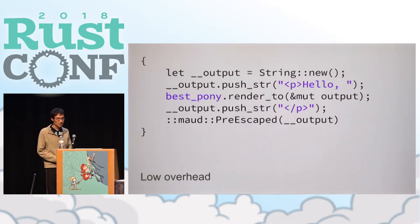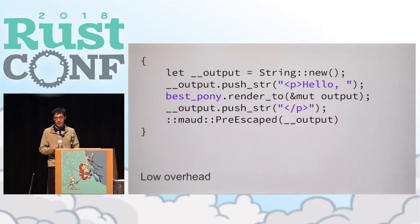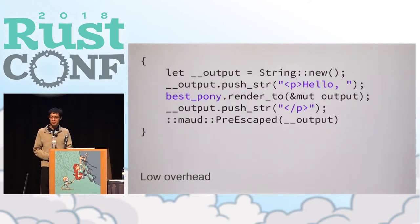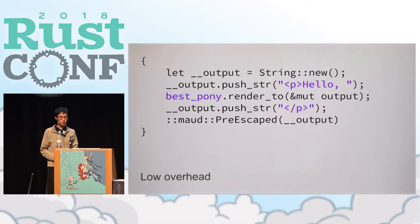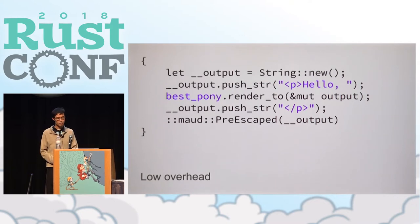The real code is a bit more complicated for various reasons, but this is the gist of it. All it does is create a new string object, push a bunch of literals to it, and this render_to method does HTML escaping. If you were to try to write an HTML template by hand, you would be hard-pressed to write something that's simpler or more efficient than that.